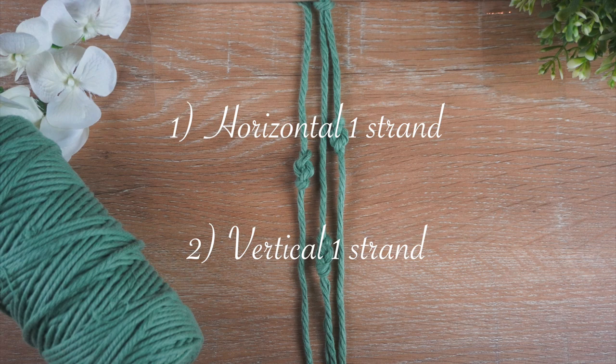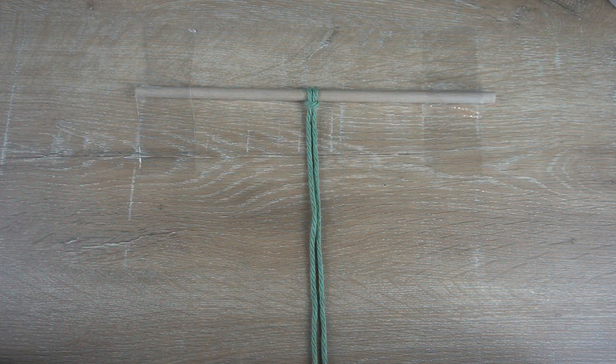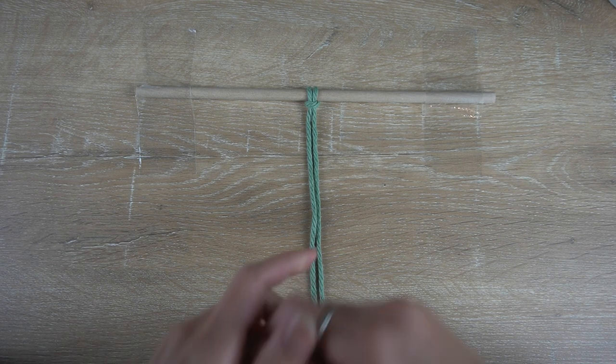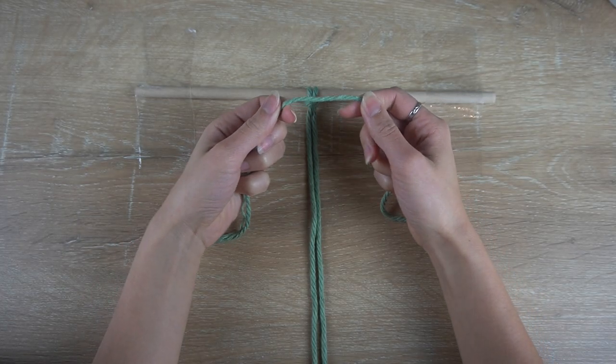I will be showing you two ways to make the eternity knot. The first way is horizontally using one strand of cord, and the second way is vertically using one strand of cord. With that, let's begin.